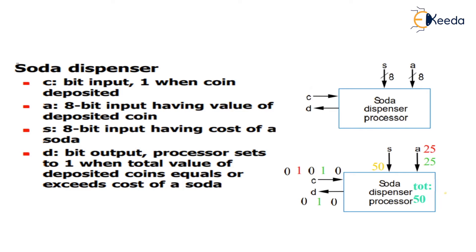The simple diagram I have given shows the soda dispenser processor. There are two inputs of eight bits each, which are S and A, and there are single-bit inputs which are C and D. C is a single-bit input that indicates when a coin is deposited. When I am inserting a coin, the C signal will be turned on — a one will be indicated to the processor, meaning the coin has been accepted.